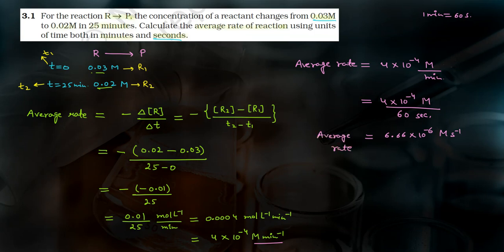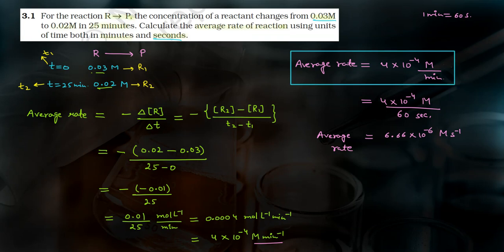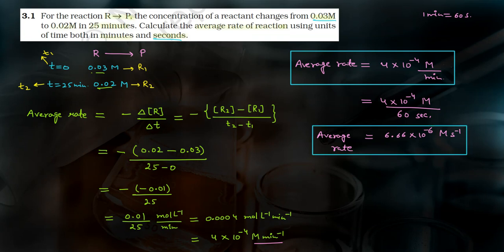So we have two answers. Let's box both of them. The first is the average rate in the unit of minutes, and the second is the average rate using the unit of time as seconds. We'll meet with the next question. Bye-bye.